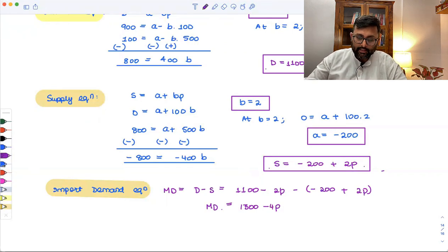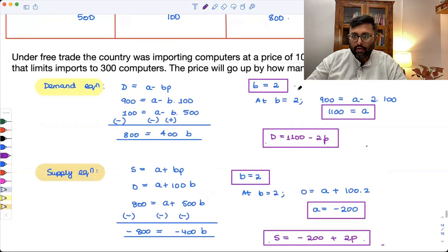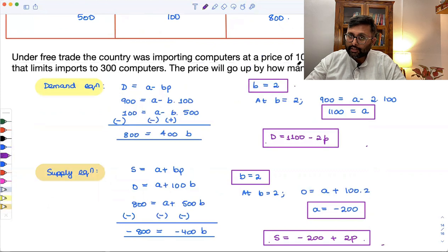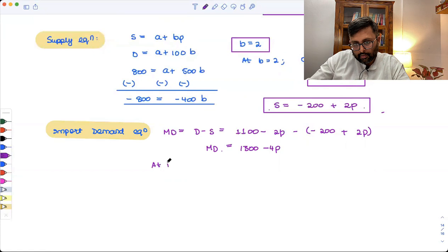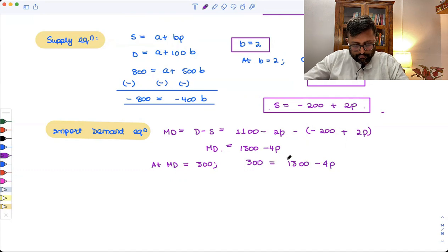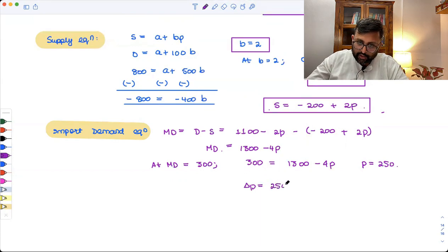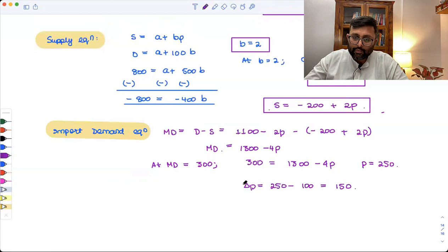Now the point is that the government has said this, that under free trade, the country was importing computers at the price of 100, but now imposes a quota that limits import to 300 computers only. So for 300 computers, what should be the price? The price will come out to be 250 once you solve this. So change in price is going to be earlier, the price was 100. Now the price is 250. Price will increase by 150.